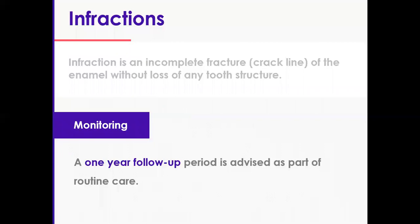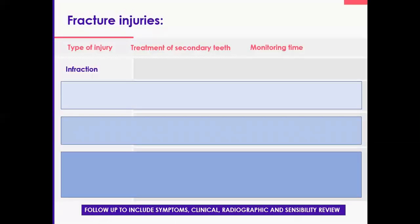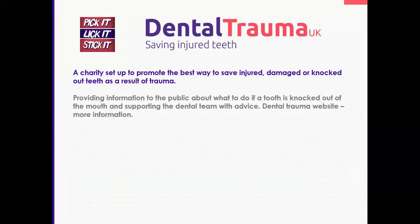Monitor annually — clinically and radiographically — doing sensibility testing each time. What you're looking for: the tooth should remain positive to sensibility testing, no pain, no swelling, no sinus discharge, no mobility, no increase in periodontal pocket depth, no sign of apical radiolucency on radiograph, and no sign of resorption. Have a systematic tick-box approach every time you review the patient.